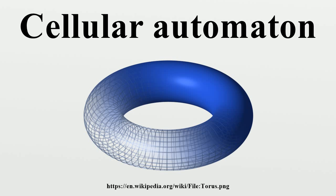Cellular automata are also called cellular spaces, tessellation automata, homogeneous structures, cellular structures, tessellation structures, and iterative arrays. A cellular automaton consists of a regular grid of cells, each in one of a finite number of states, such as on and off.